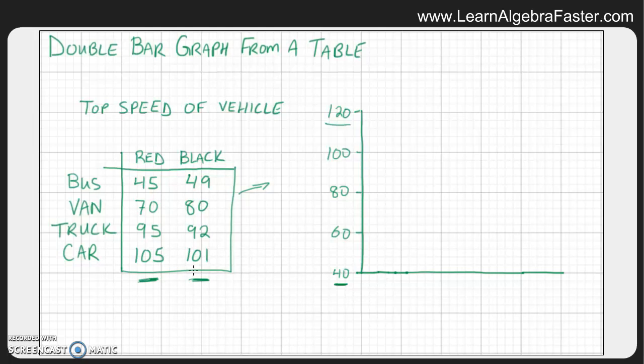So now that we have the vertical axis shown, we need to come to the horizontal axis, and this is where we will group things. So in this case we want to show the bus, the van, the truck, and the car. So the horizontal axis is where we group things, and in this case we are grouping the type of vehicle that we have.